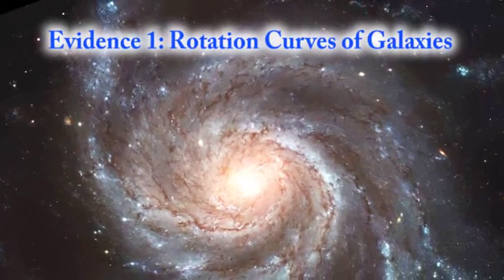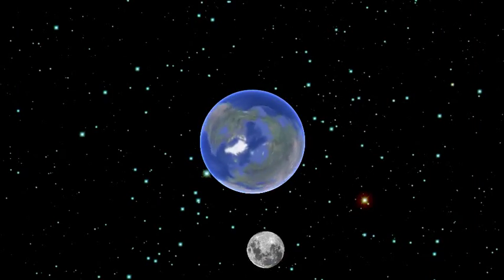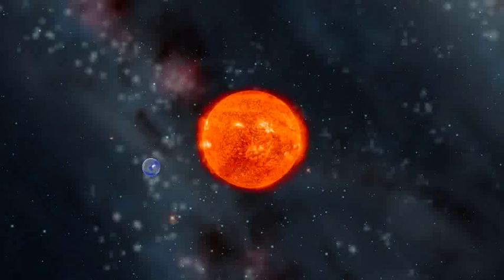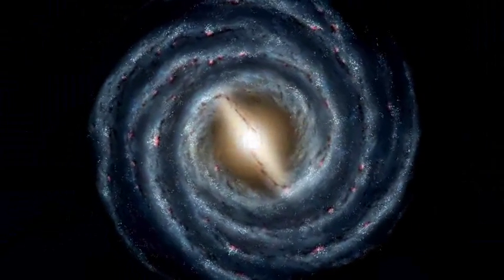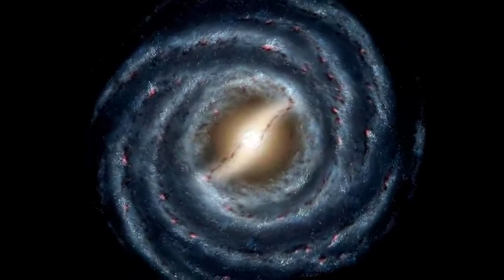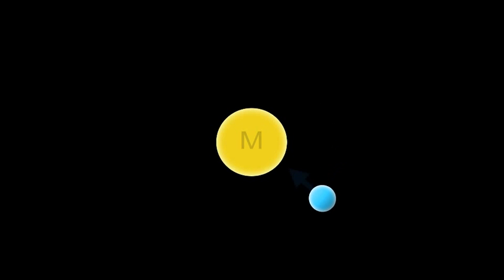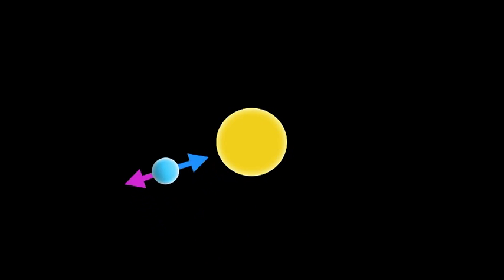Essentially we have three pieces of evidence to show the existence of dark matter, the first being the rotation curves of galaxies. The Moon orbits around the Earth, just like the Earth orbits around the Sun. The Sun also orbits around the center of our galaxy, the Milky Way, along with hundreds of billions of other stars. At each of these stages we have an example of orbital motion, which is explained by Kepler's laws. For any object orbiting a bigger one, the gravitational force stops the smaller object from flying off, providing the centripetal force required to keep it in orbit.